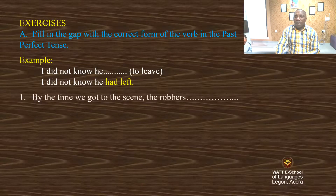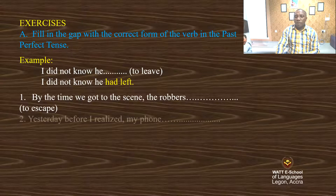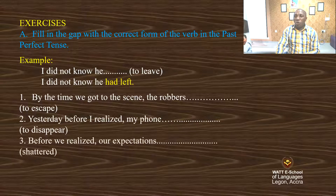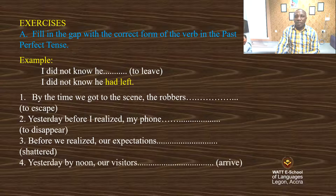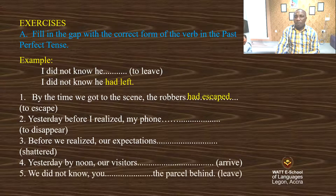Question one: By the time we got to the scene, the robbers? We are going to put those verbs in the past perfect, adding 'had' plus the past participle. Answer: By the time we got to the scene, the robbers had escaped.